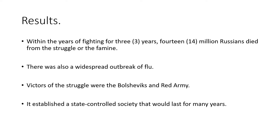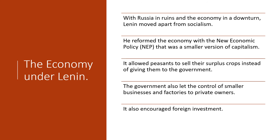That support had very little success. Within three years of fighting, 14 million Russians died from the struggle or from famine, as there was obvious destruction of farmland and widespread hunger. Many people also died from the fighting itself, and there was a widespread outbreak of flu. The victors were the Bolsheviks and the Red Army. Lenin kept control of Russia, and with the defeat of the White Army, it established a state-controlled society where the government would control Russia for many years.